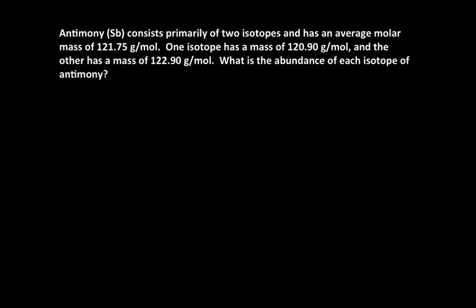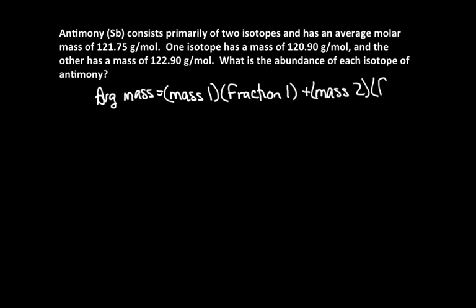The equation we have is that the average mass is equal to the mass of isotope 1 times its fraction, or times the fraction of isotope 1, plus the mass of isotope 2 times its fraction.